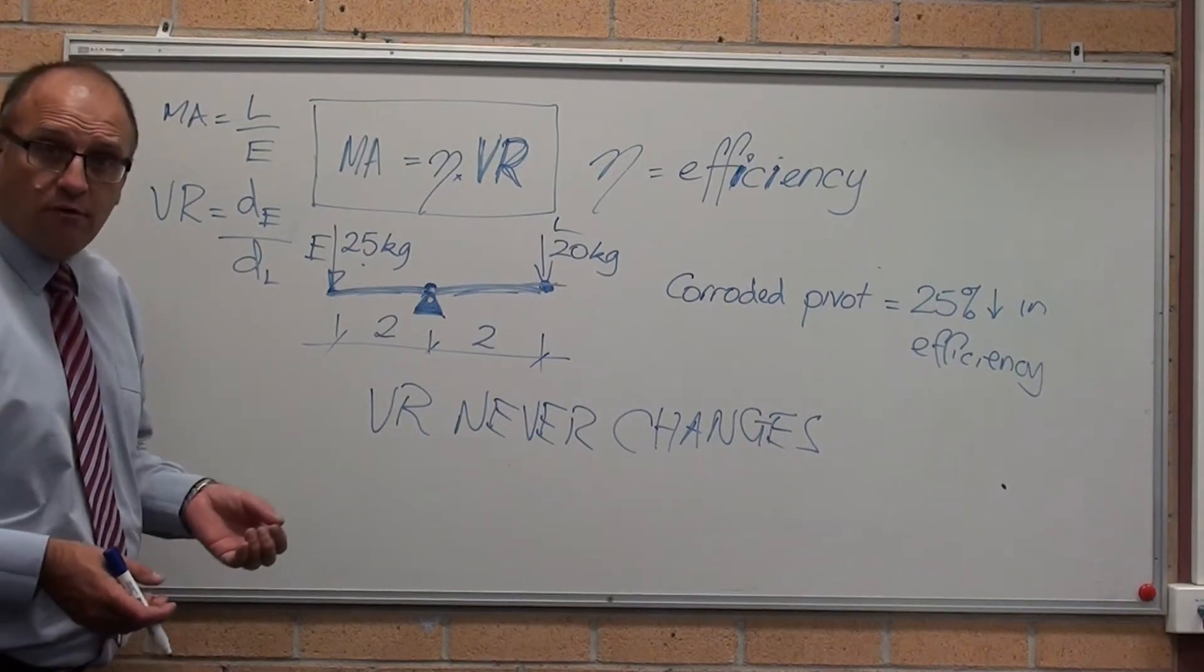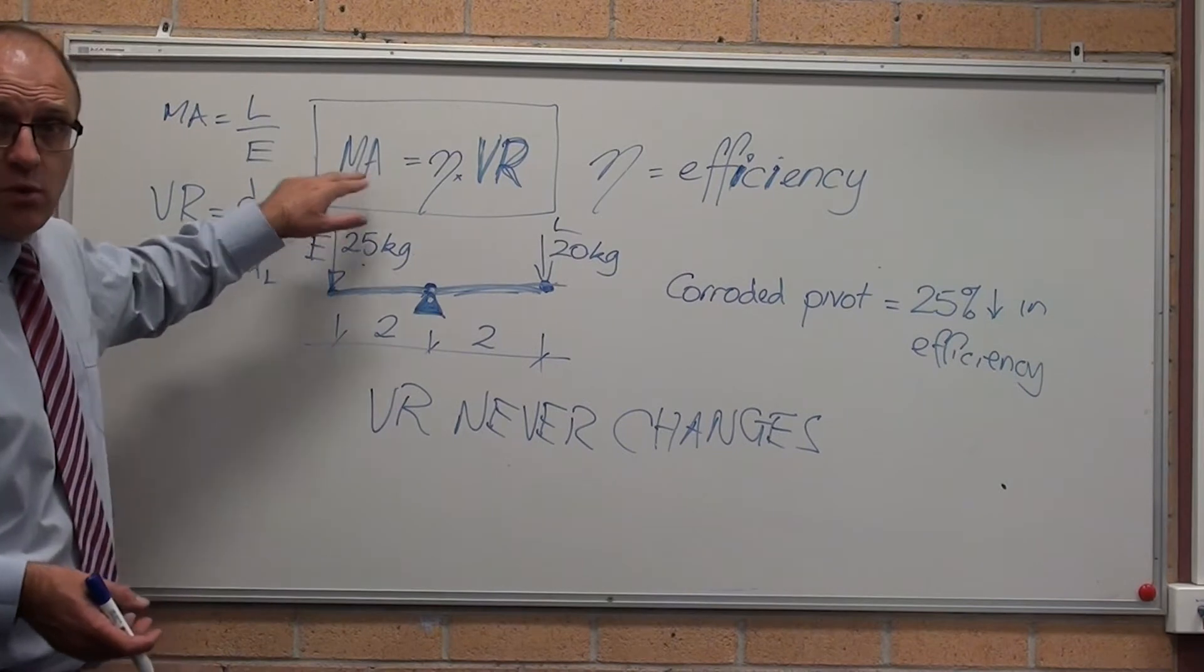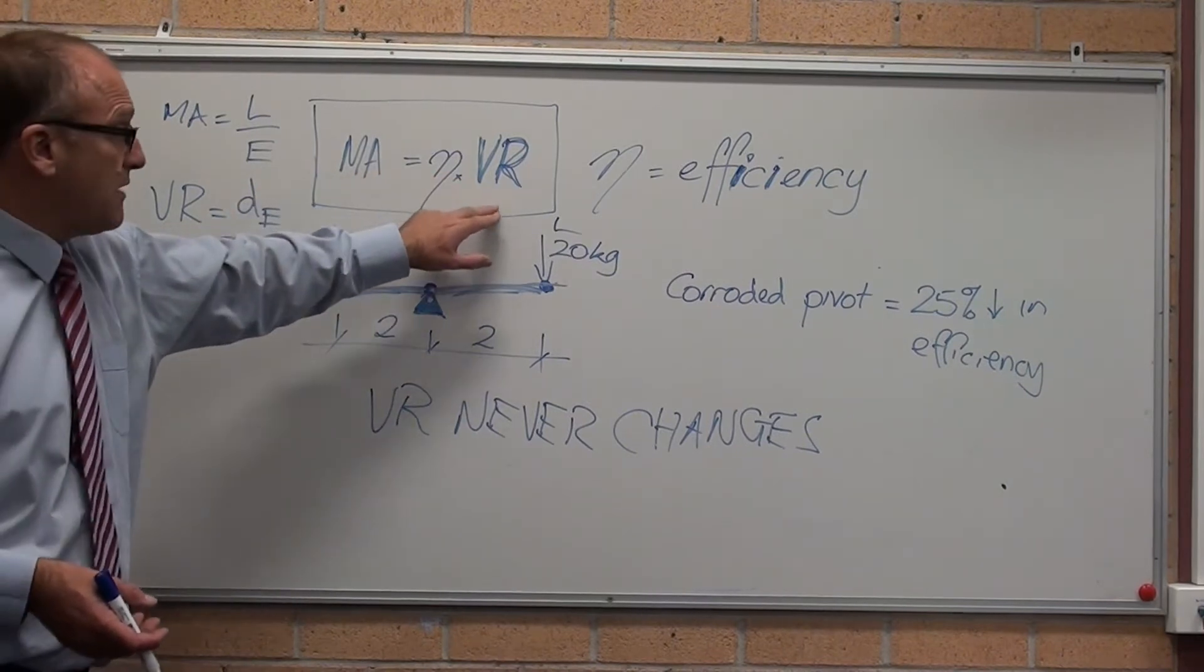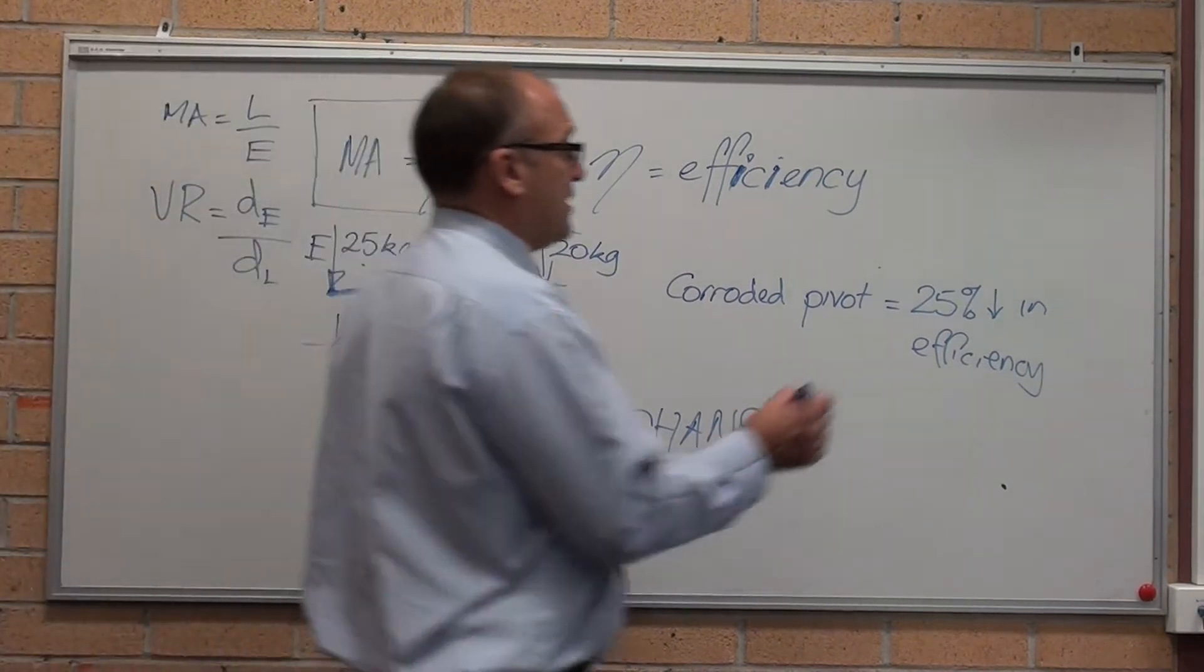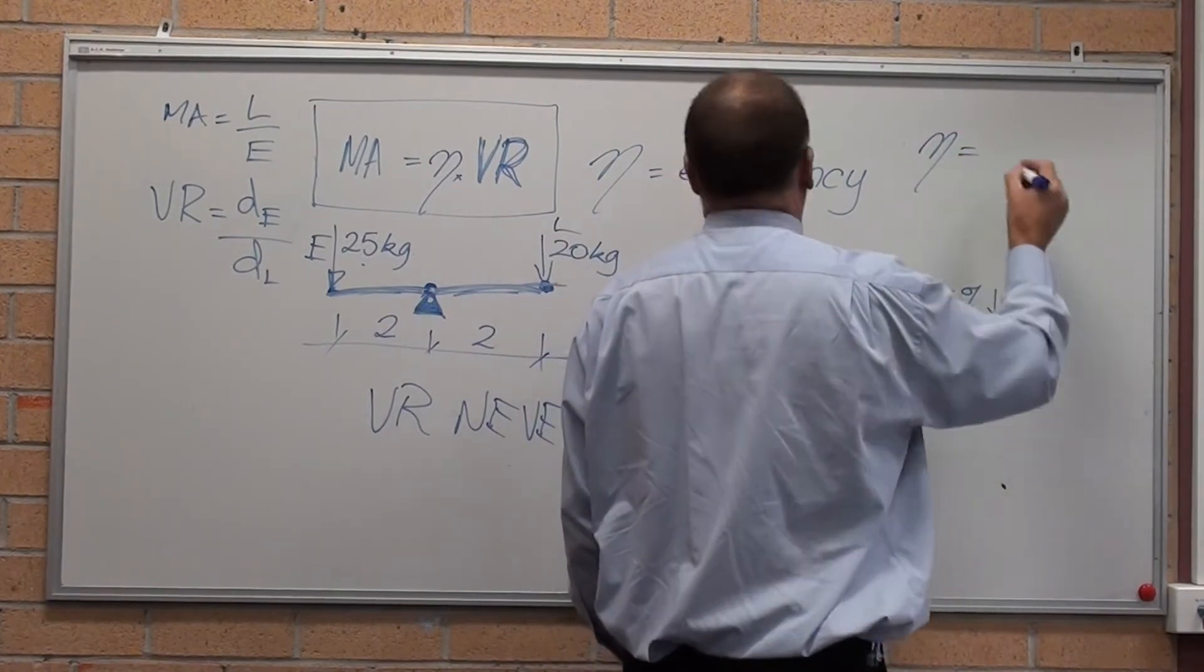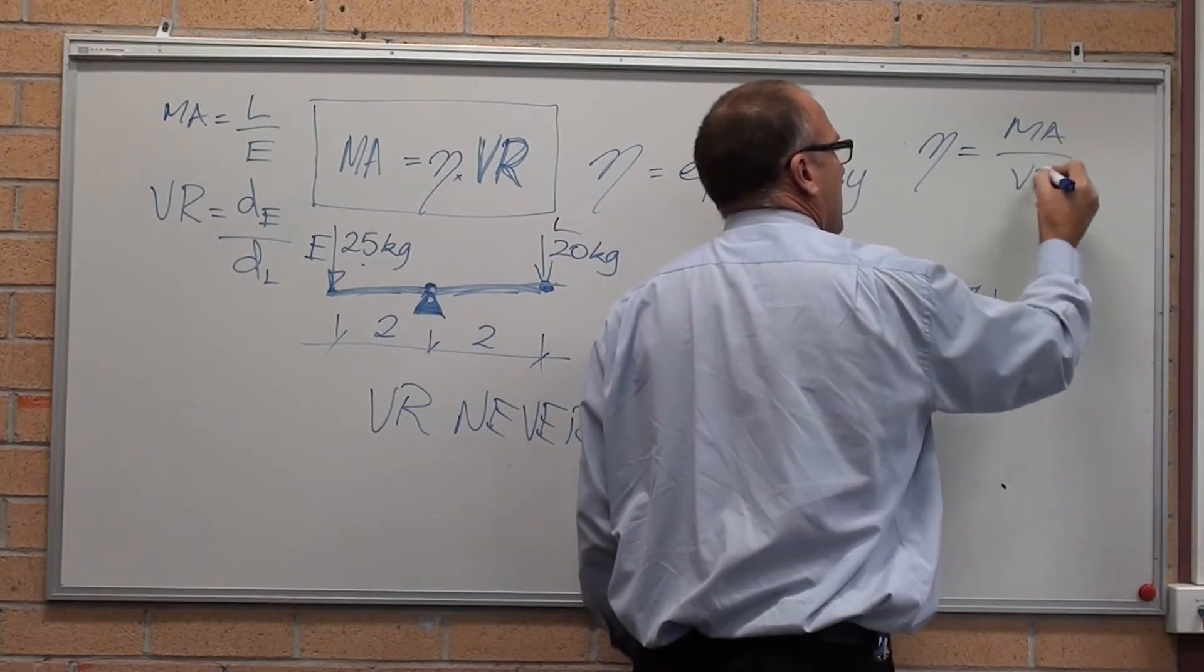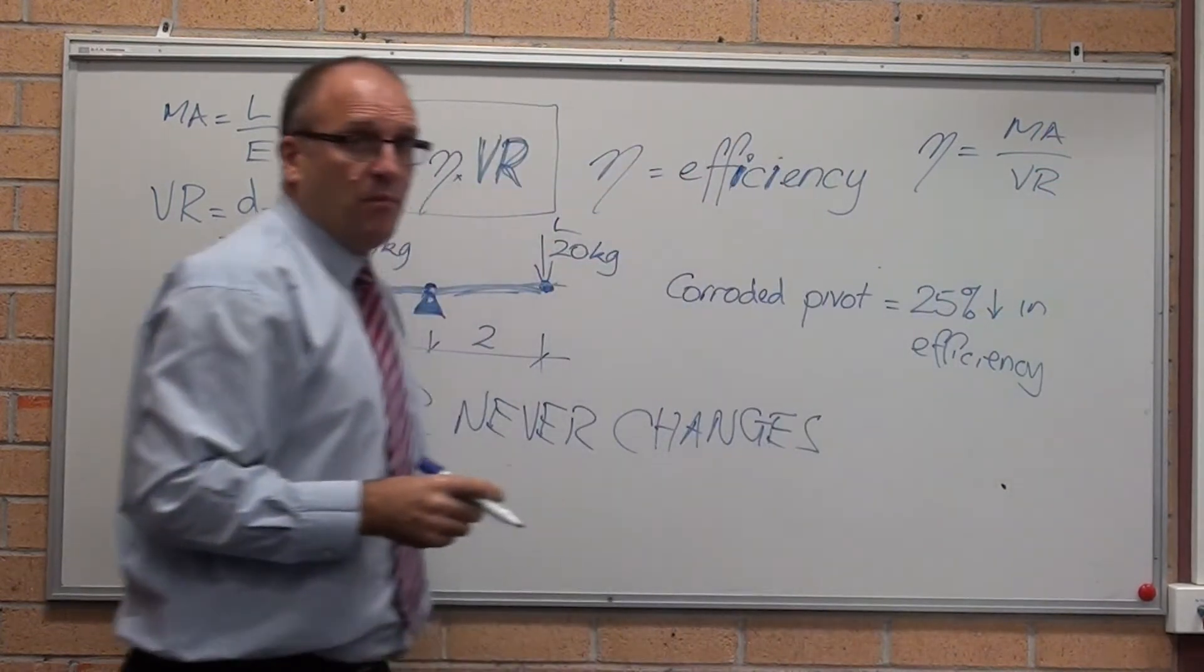Just going on to year 12, the simple mechanical advantage equals efficiency times velocity ratio. I think it's in the back of your exam as efficiency equals mechanical advantage on velocity ratio. I can't remember which one it is.